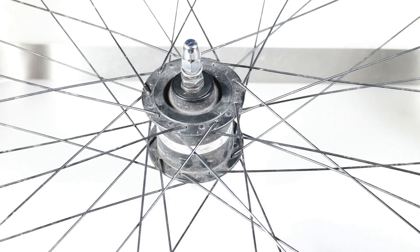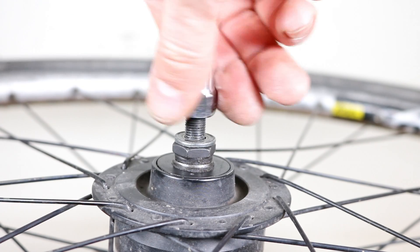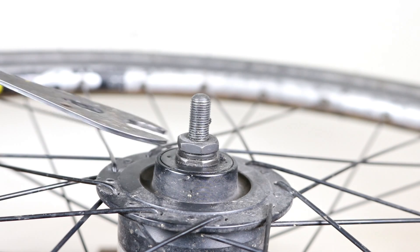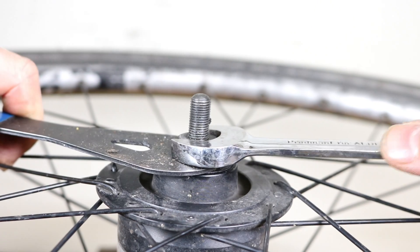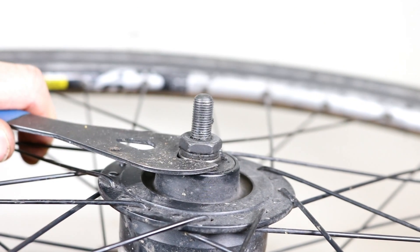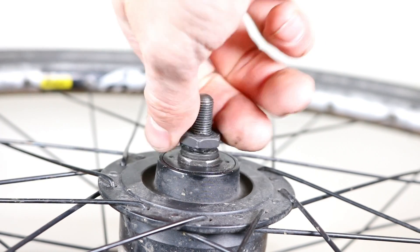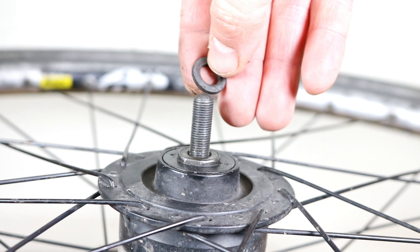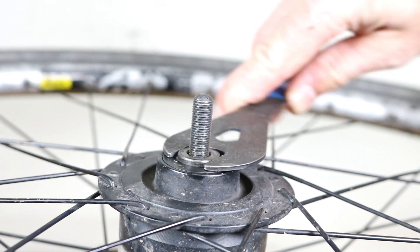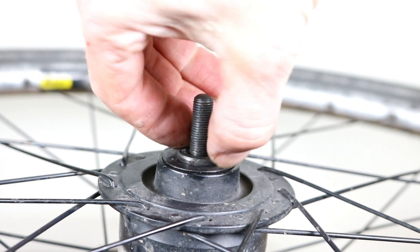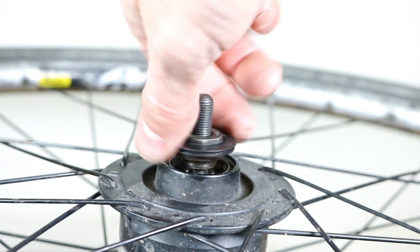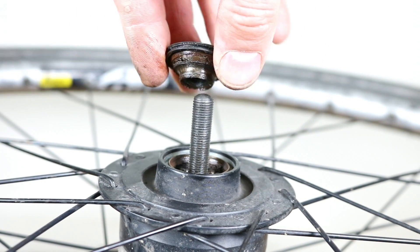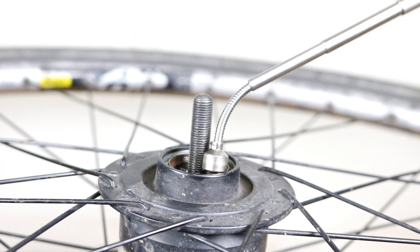Place the wheel on a bench so that you can work on the non-drive side. Remove the wheel nut and washer. Use a 17mm cone spanner to grip the cone and another 17mm spanner to loosen the locknut anti-clockwise. Remove the locknut and spacer. Use the 17mm cone spanner to loosen the cone and unscrew it by hand.